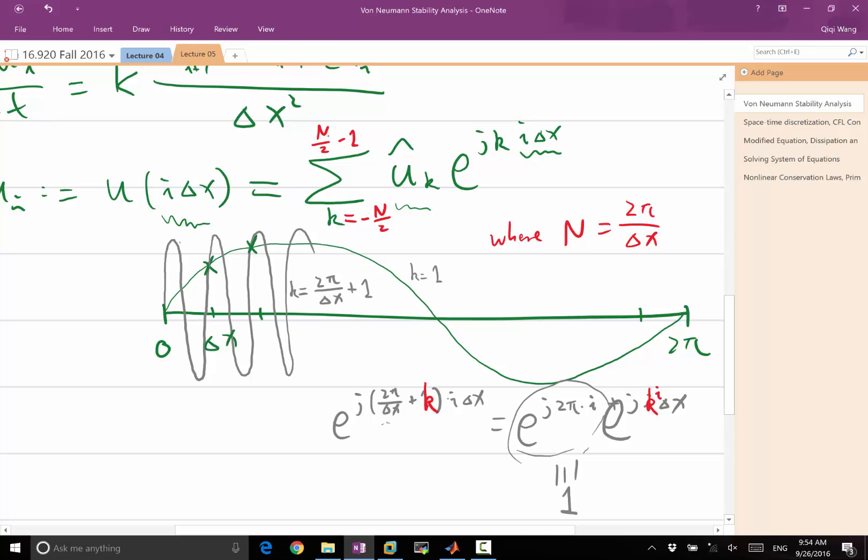If I, for example, go all the way to n over 2 instead of n over 2 minus 1, then I have a duplication, because k equal to minus n over 2 is the same as positive n over 2, right? They are exactly off by n, which is 2 pi over delta x. And we already said, if I shift k by 2 pi over delta x, it's the same function on the discrete points.